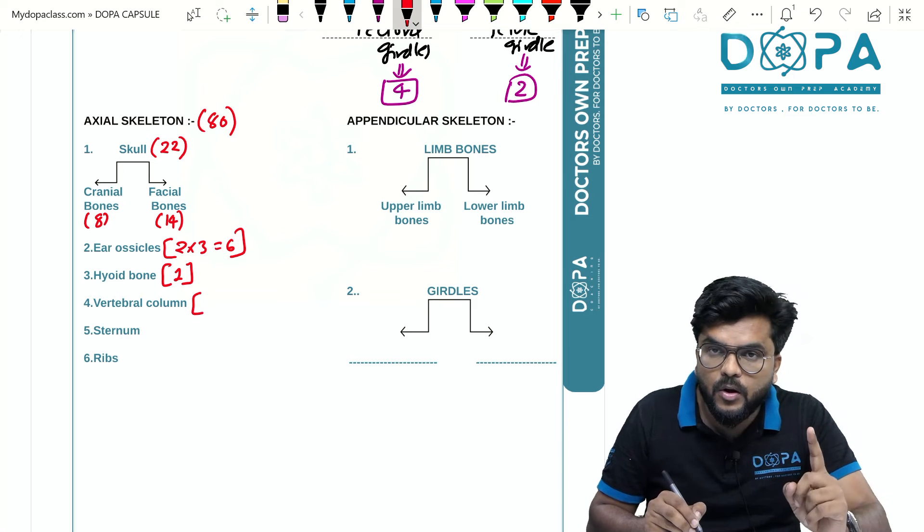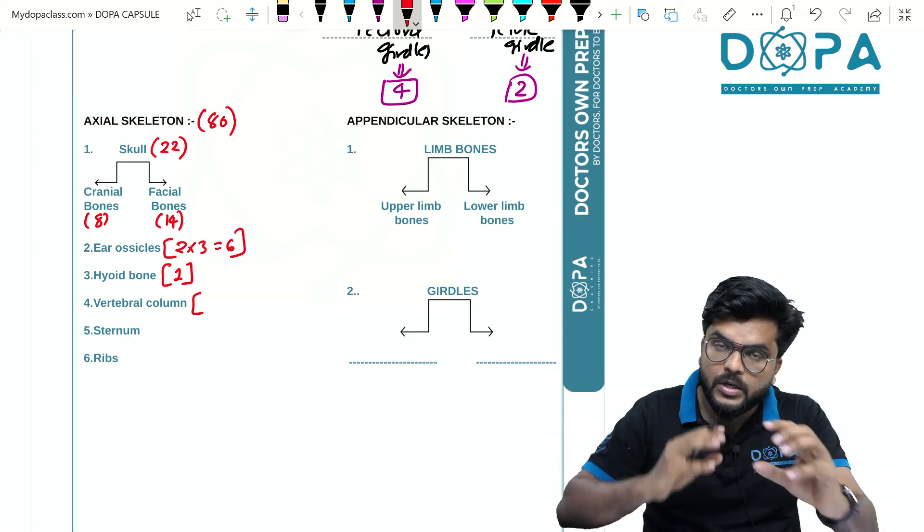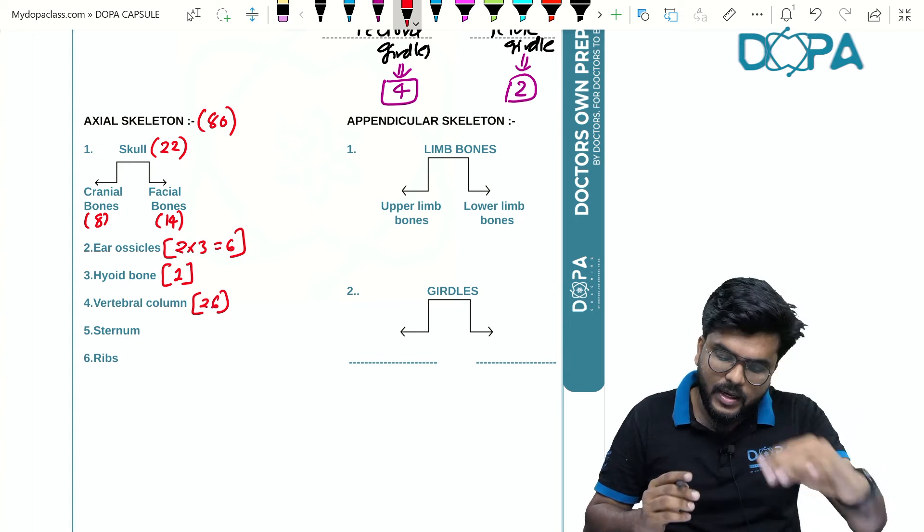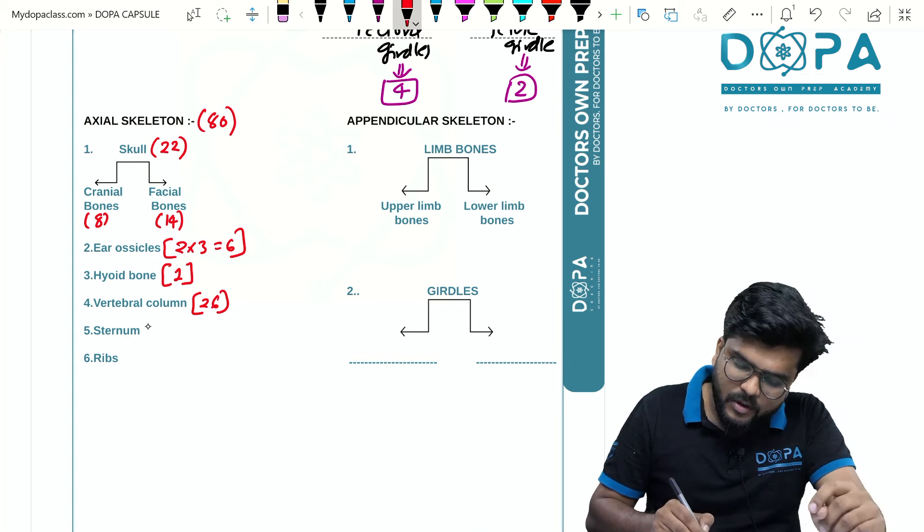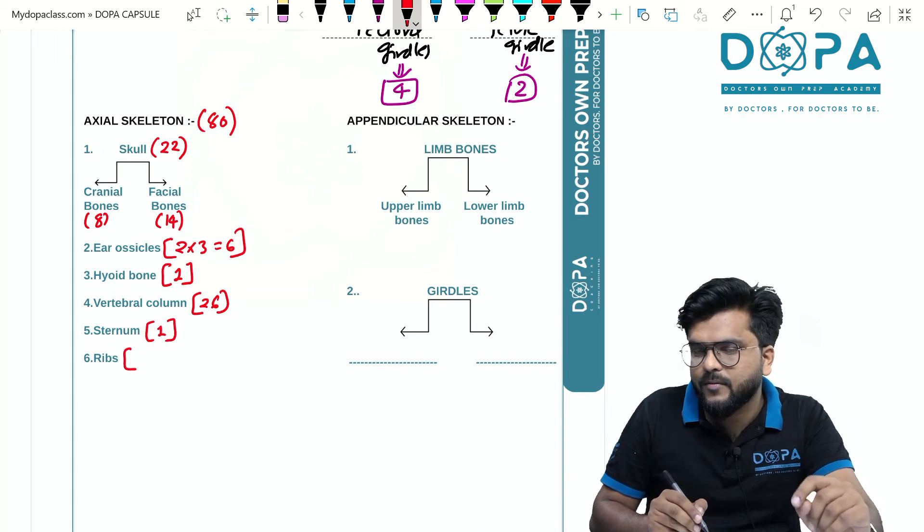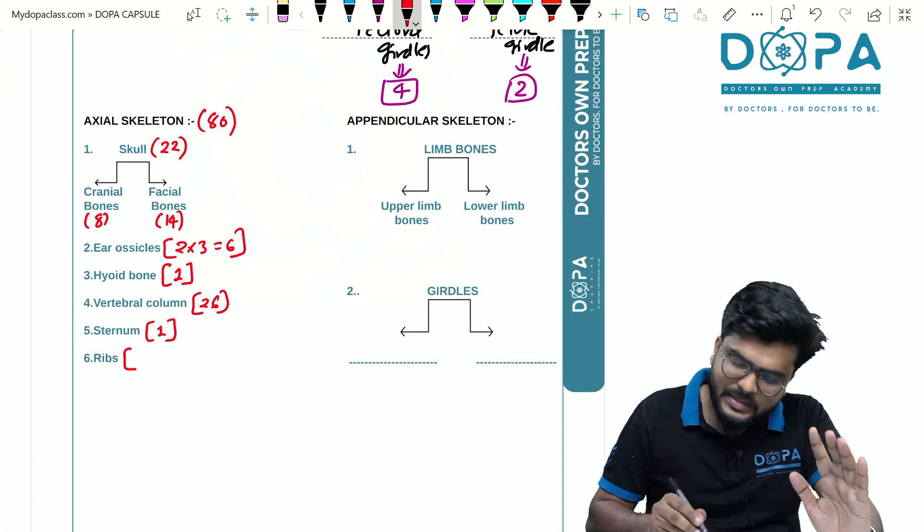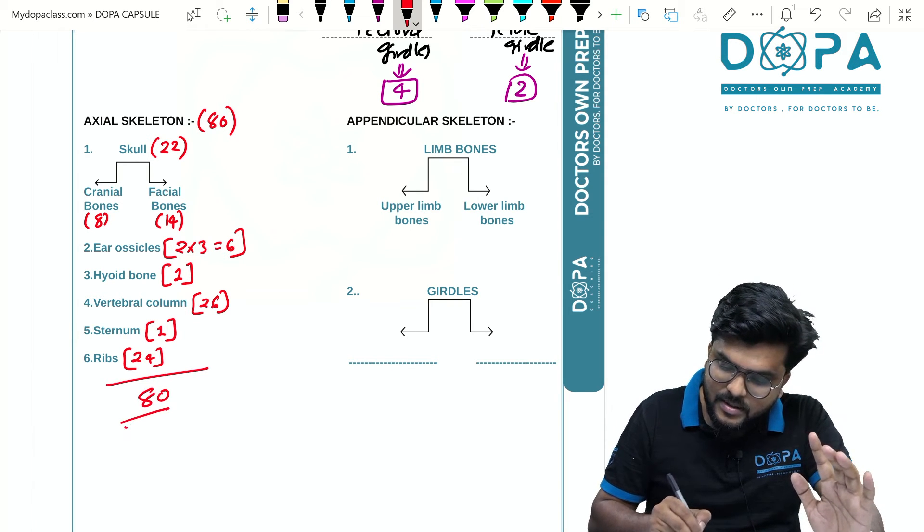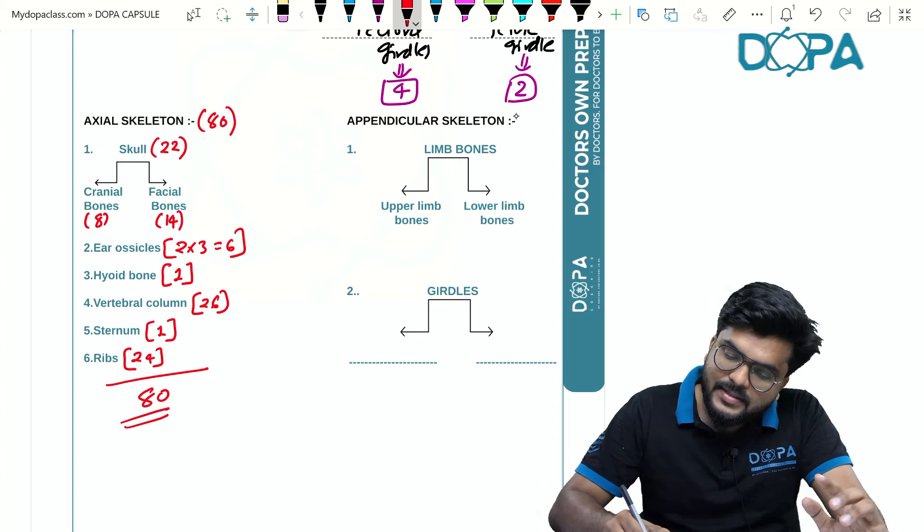In the vertebral column, totally we have 26 vertebral bones which are stacked together. Sternum is a single bone which is also called breast bone. We have totally 12 pairs of ribs, that is totally 24. So totally we get 80 bones. Now appendicular skeleton: we totally have 126 bones which is distributed among the limb bones as 120 and girdles as 6.